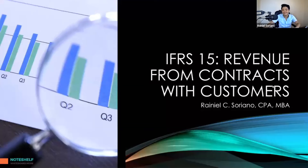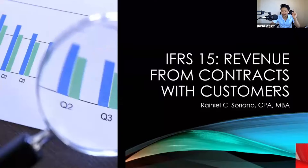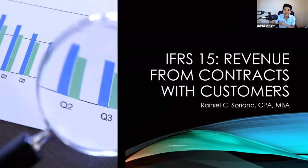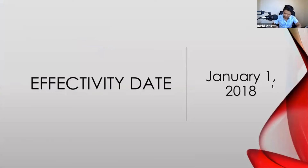Hello everyone. Our topic for today will be IFRS number 15, that's revenue from contracts with customers. We'll start with the effectivity date of the standard. For today, expect that we will only discuss the main body of the standard, meaning we will not dwell on the appendices. The effectivity date of this standard will be January 1, 2018.